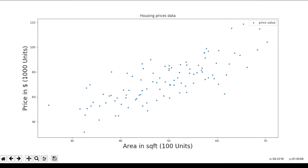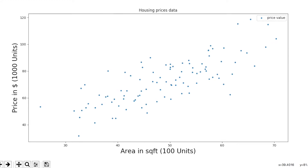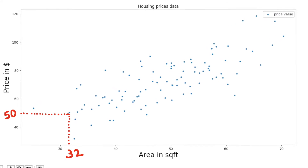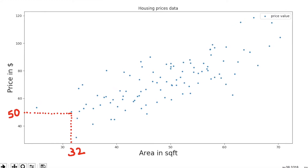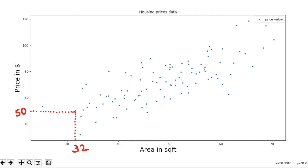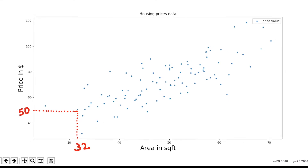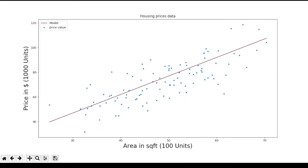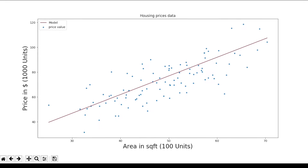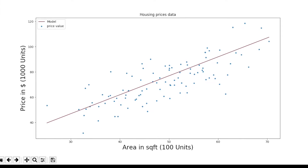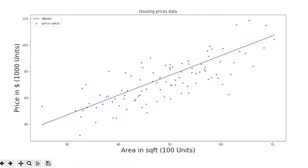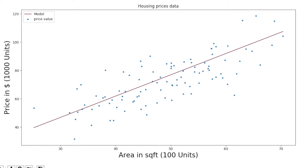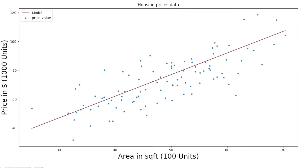Let's plot the data. Looking at this dataset, we can see that if the area is around 3200 square feet, then the price could be somewhere around $50,000. If we generalize this, we need a best fit line that describes the dataset. This is the goal of the machine learning problem — to find the best fit line given the data, and this is what your machine learning algorithm will learn from the given data.